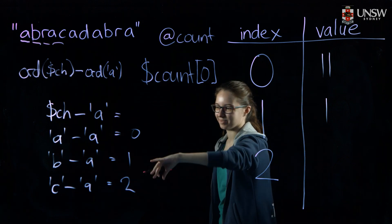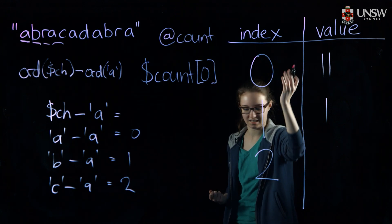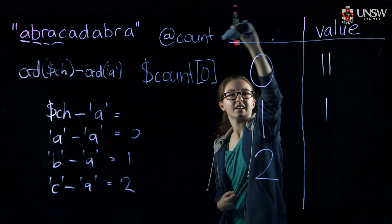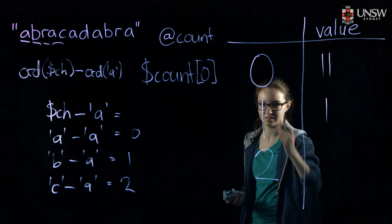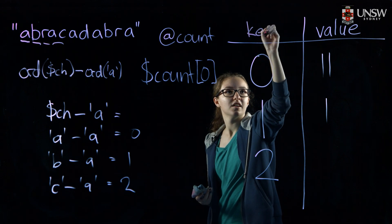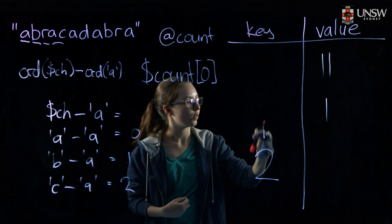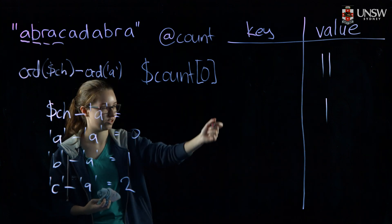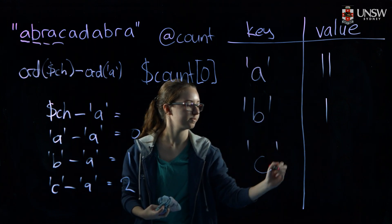What if instead of using a numeric index, we could just use the character itself as the key? What if we could use the string instead of an index? This is exactly what hashes are built for. Instead of being forced to use a number like 0, 1, or 2, you can use other types — we call them keys instead of indexes. Keys don't have to be numbers; we could use strings as our keys and store values directly using those strings.